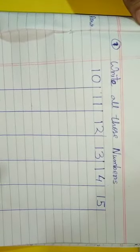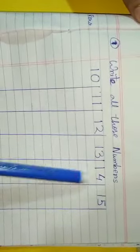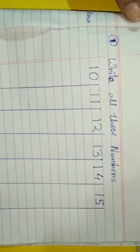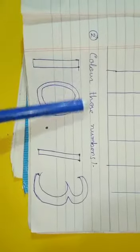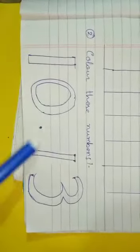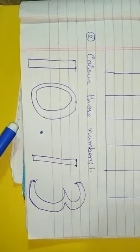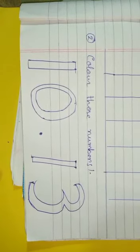This is your homework, children. Write all those numbers. You have to write the numbers in this room. And this is your second homework. Color all those numbers. Ok? I love you.